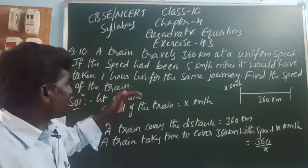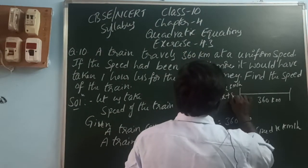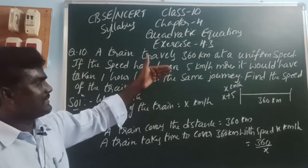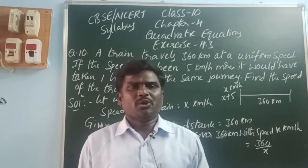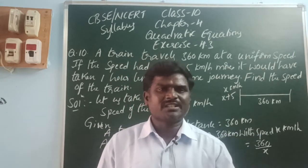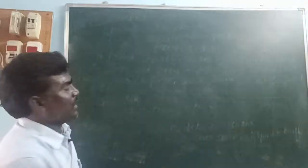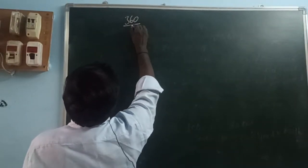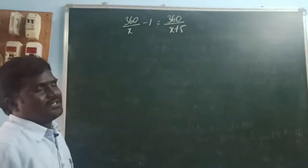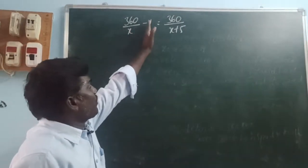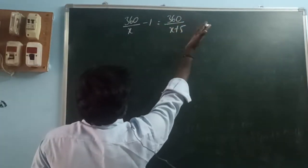The condition is: when the speed is increased by 5 km per hour, the time decreases by 1 hour. Speed and time are in inverse proportion — one quantity increases, the other decreases. So speed is increased by 5 km per hour and time is decreased by 1 hour.